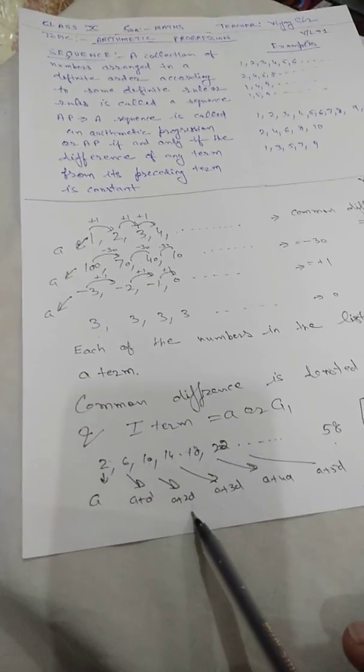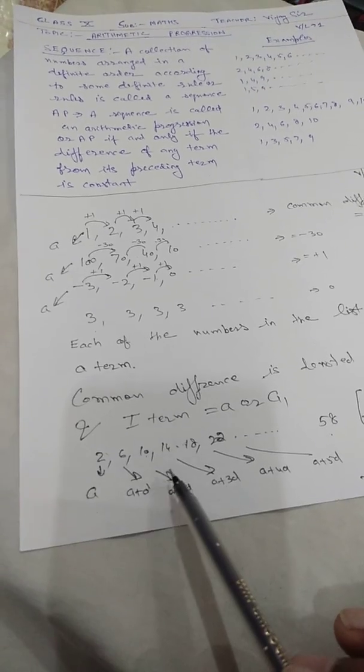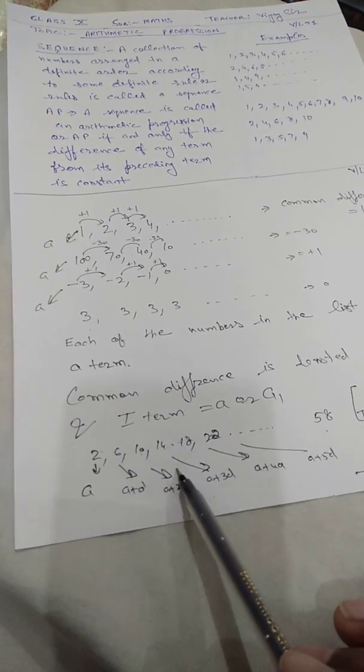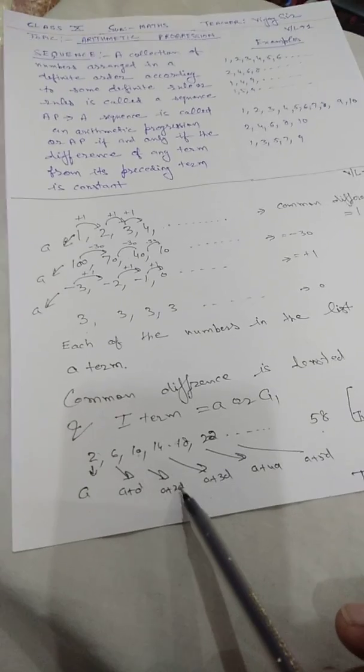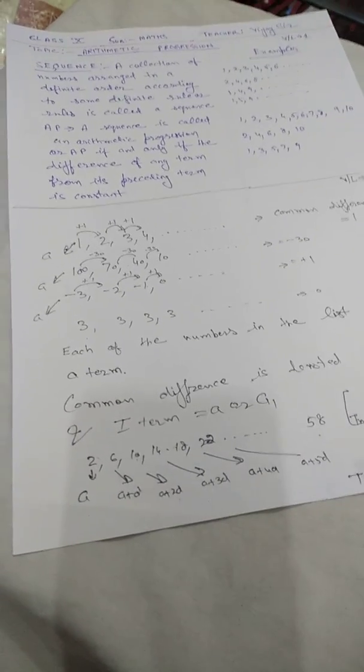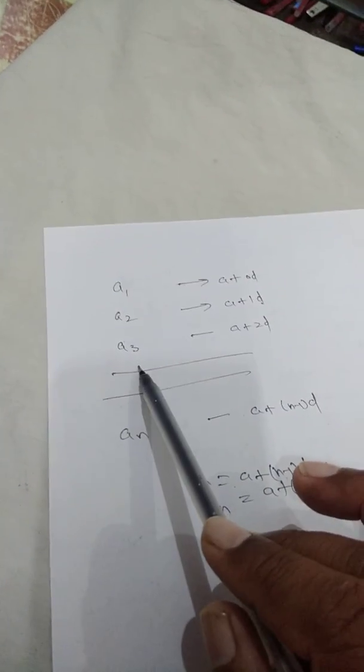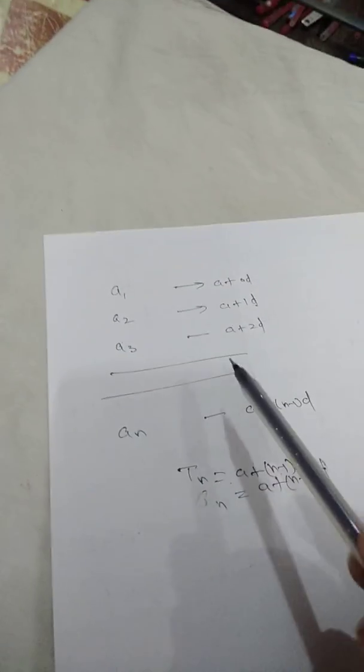If we write the third term as a plus 2d, it means the first term plus 2 multiplied by the common difference d. We can understand the pattern: the first term is a plus 0d, the second term is a plus 1d, the third term is a plus 2d, and so on. The nth term can be written as a plus (n minus 1) times d.